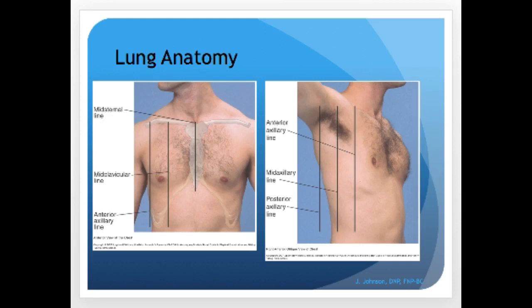These next pictures will help with documentation — you want to use reference lines to describe the location of your findings. Some lines are precise, like the midsternal line down the middle of the anterior chest. Others are estimated, like the midclavicular line, approximately halfway along the clavicle. There are also posterior lines including the vertebral and scapular lines. The main ones to know are the midsternal line, midclavicular line, anterior axillary line, mid-axillary line, and posterior axillary line.